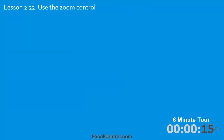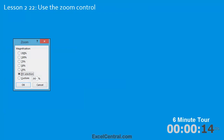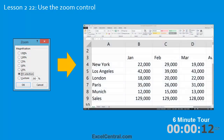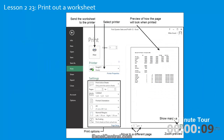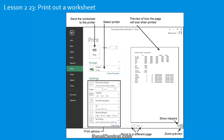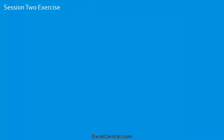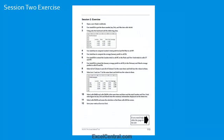In the twenty-second lesson we'll use the Zoom dialog to zoom a range of cells so that they fill the Excel window. In the twenty-third lesson you'll learn everything about printing out your workbooks — how to zoom the preview, move to different pages, set all the print options, and select a printer. As with all lessons, there's a session exercise to test your understanding of the new skills you've learned.